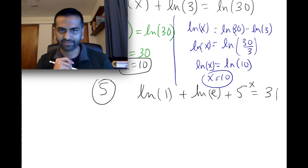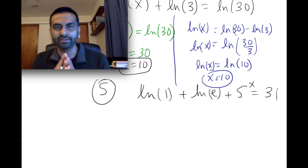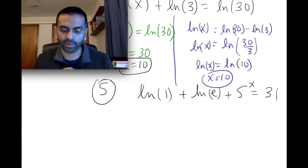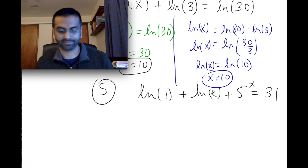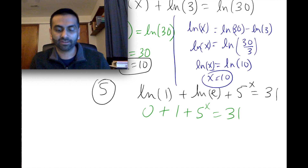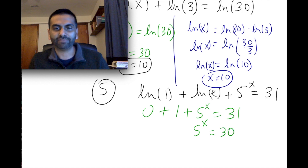Now let's do this next problem — solve for x. Two useful factoids: ln of 1 is always equal to 0, and ln of e is equal to 1. Looking at this equation, ln of 1 is just 0, and ln of e is just 1. So far this is just 1 plus 5 to the x equals 31. Subtracting 1 from both sides gives us 5 to the x equals 30 — that's the problem we started this video with.